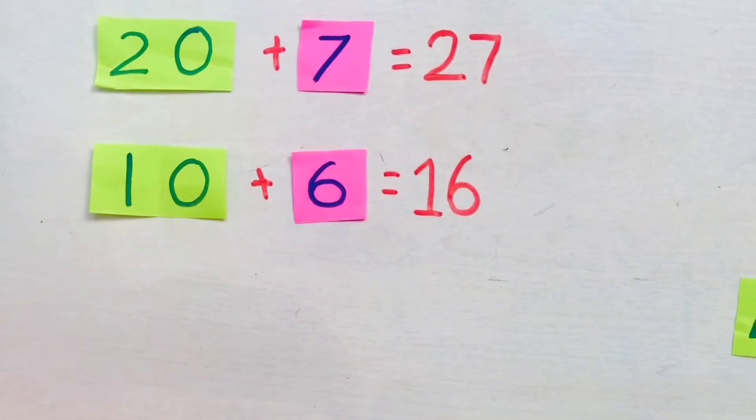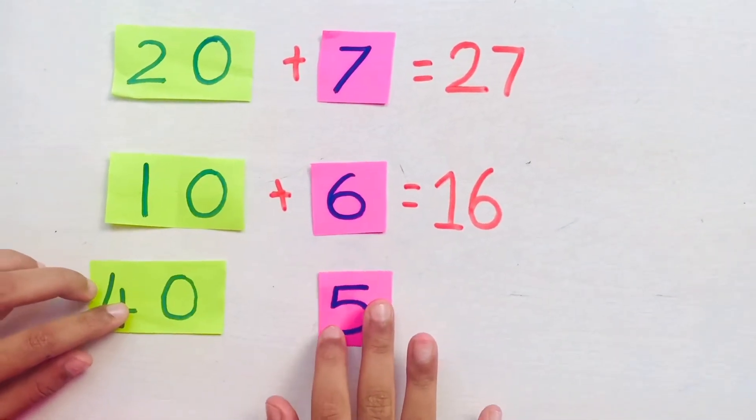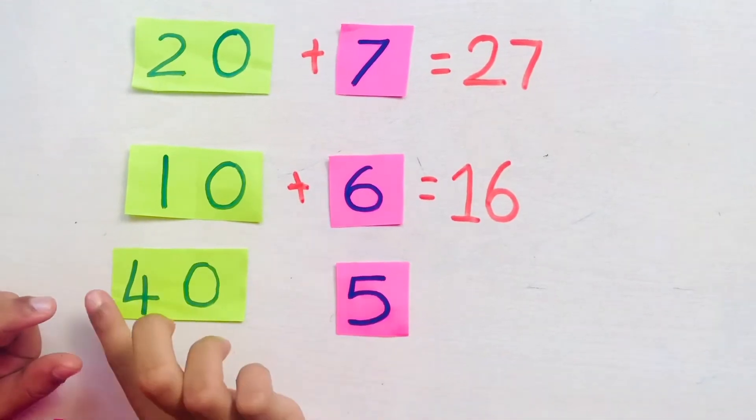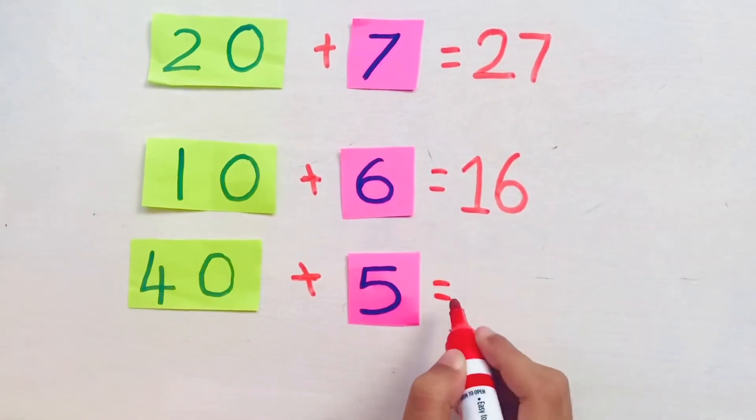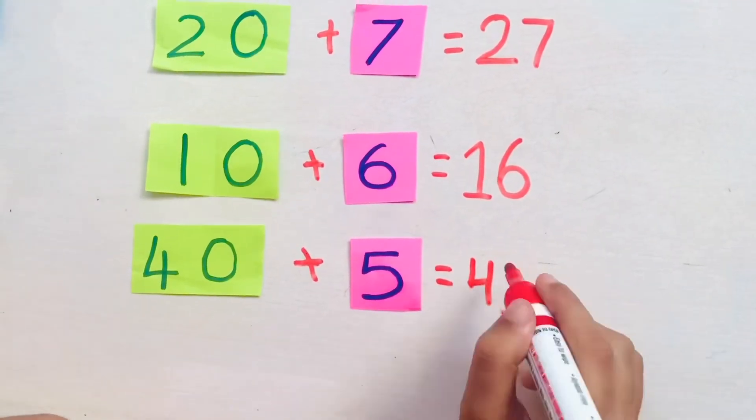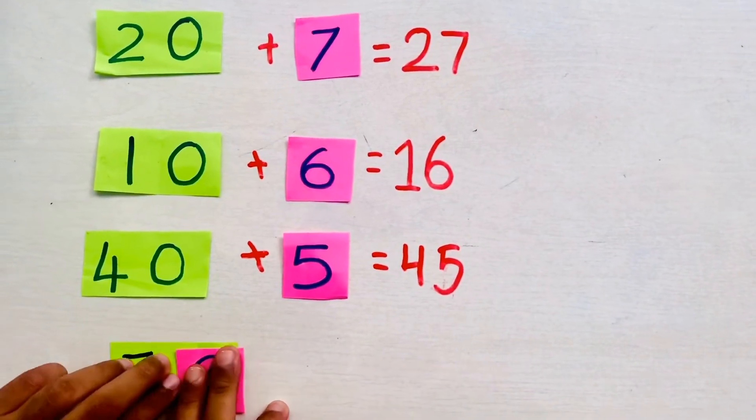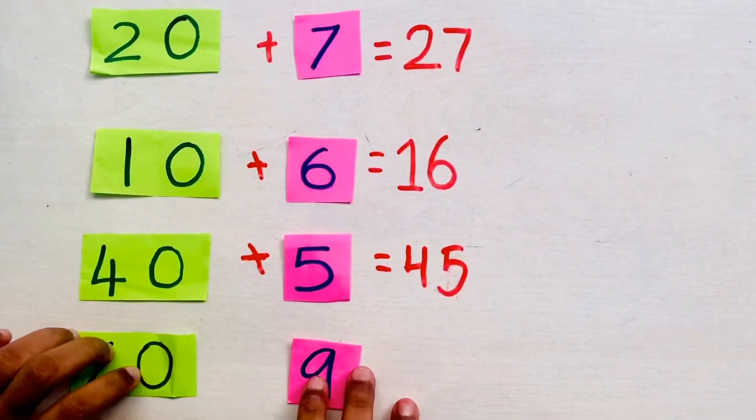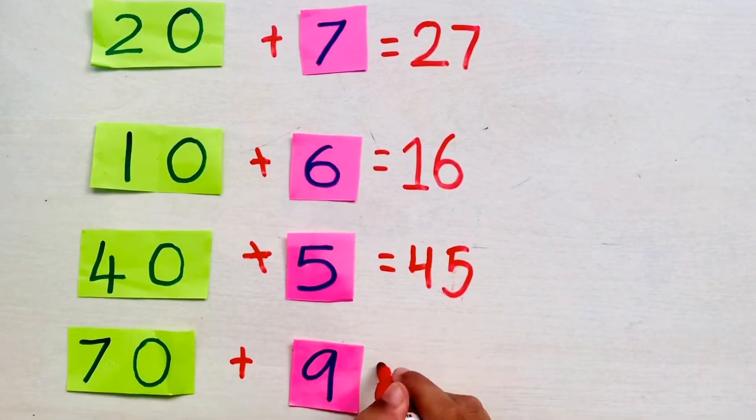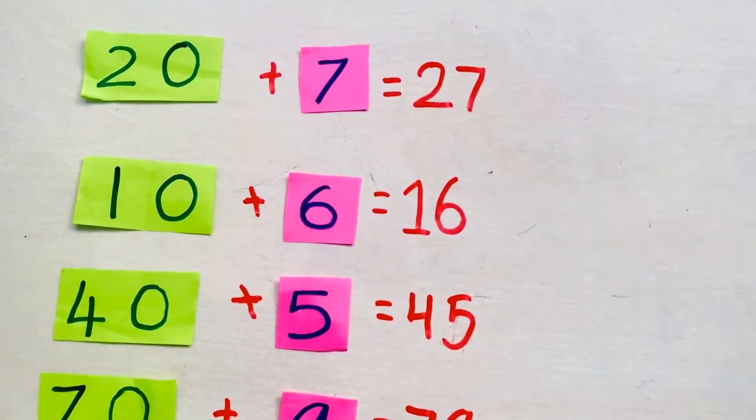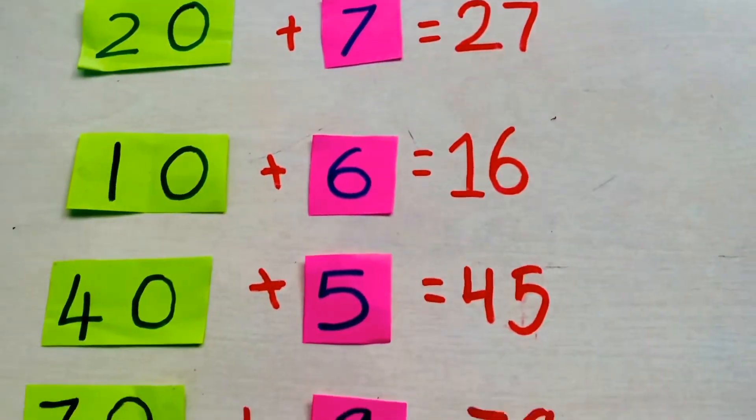Next number is 45. We separate the numbers and we write 40 plus 5 makes 45. The other number is 79. We write 70 plus 9 makes 79. This is how we expand and write using the tens and units.